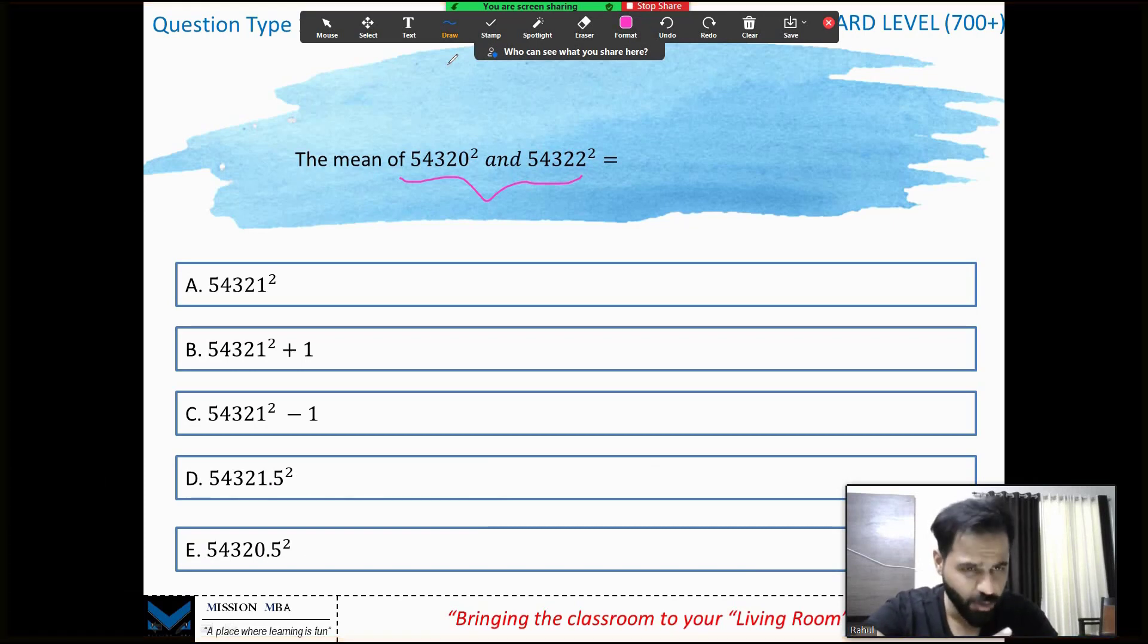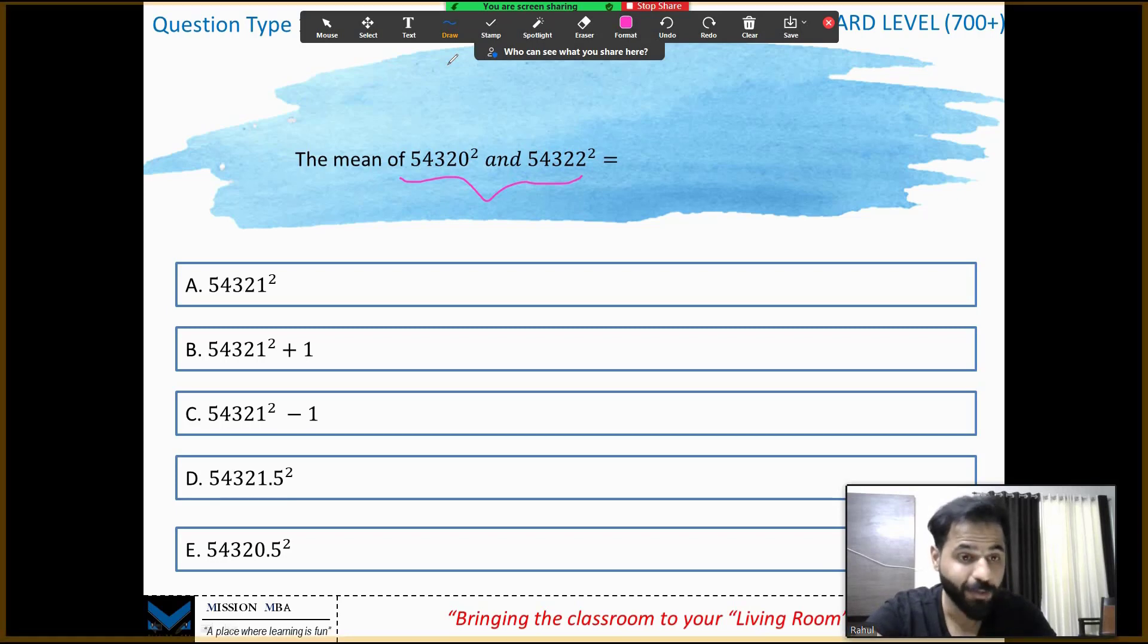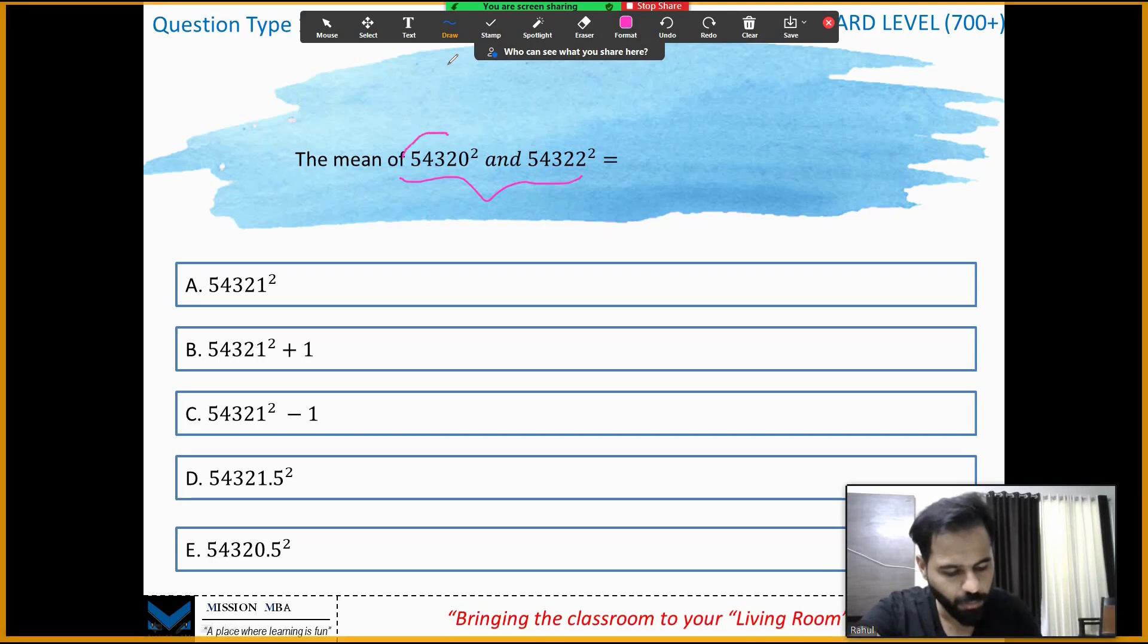Now they're looking for the mean of these big numbers. The question seems tricky but it isn't, just a little thing you need to be very careful of. Of course not, you're not going to calculate this. There's a simple catch guys. Look at the numbers, they're very close: 5, 4, 3, 2, 0 and 5, 4, 3, 2, 2. Let's see what I'm going to do with this.